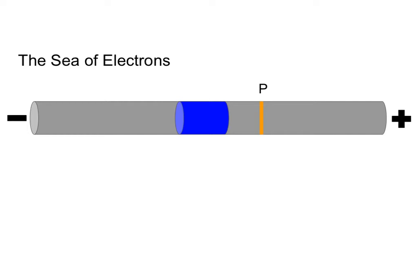Current is going to be the change in charge over time. Say I have this chunk of electrons drawn in blue, since I've been drawing my negative charges in blue. These electrons are going to be moving from the negative terminal of the battery towards the positive terminal, because our electrons are negative charges and are attracted to the positively charged terminal of the battery.